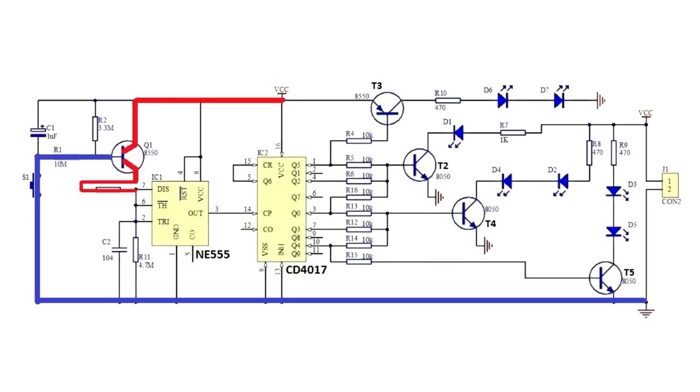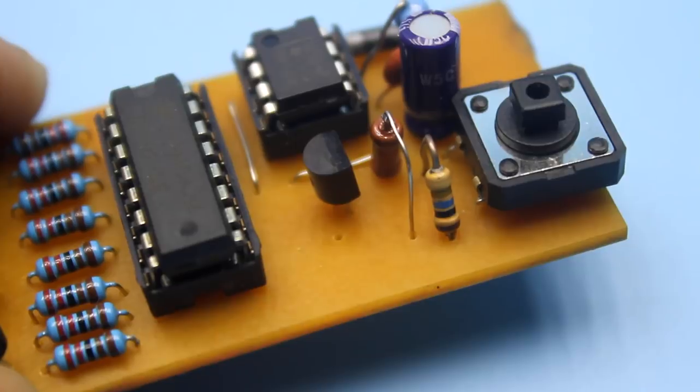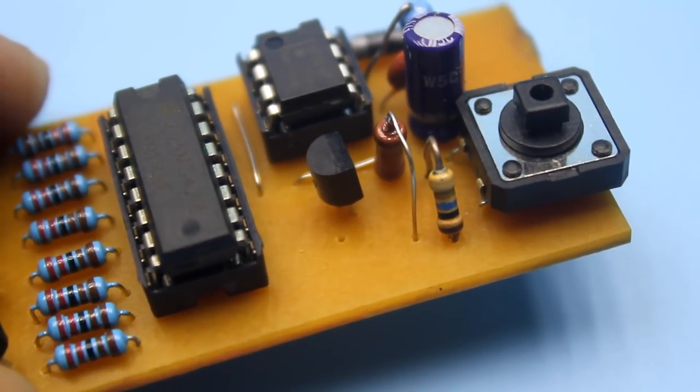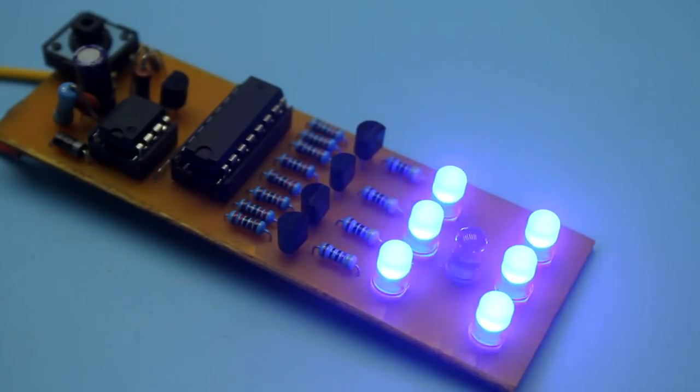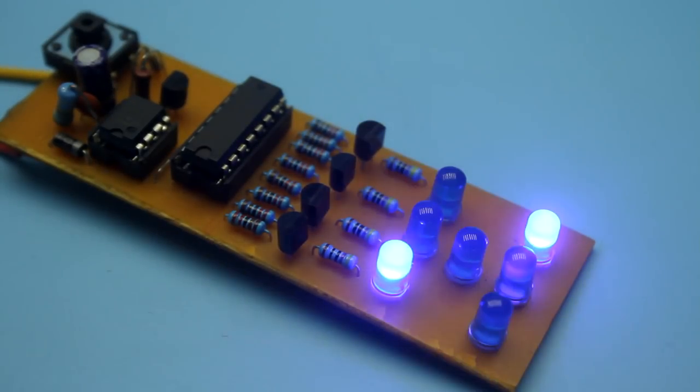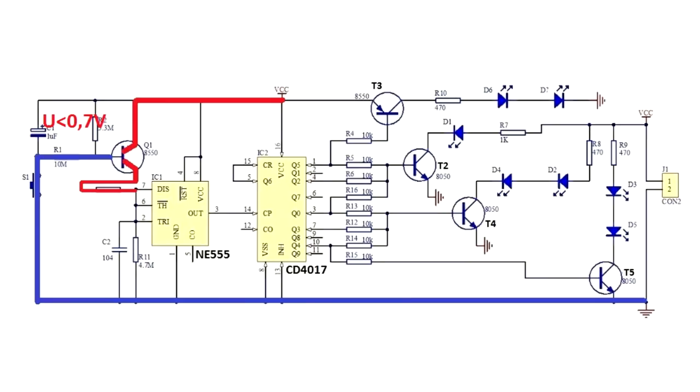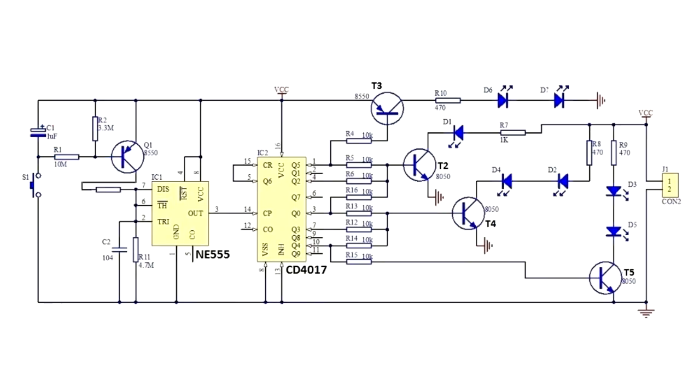As the capacitor discharges, the transistor will smoothly close. Hence, the resistance of the open channel will increase. And since it is connected in series with the frequency setting resistors of the NE555 chip, the frequency of the output pulses of the timer will change. As soon as the voltage on the capacitor is below 0.7V, the transistor will close and the timer will stop producing a sequence of pulses at the output.